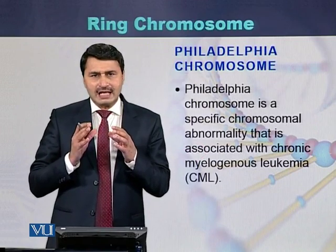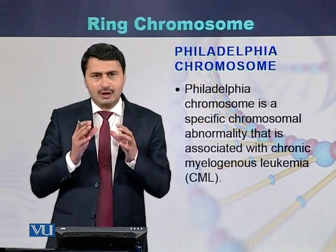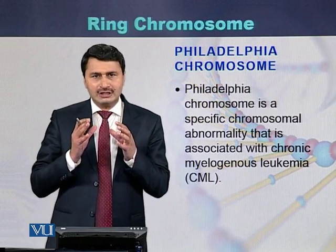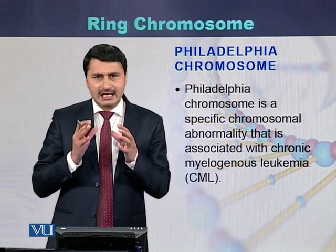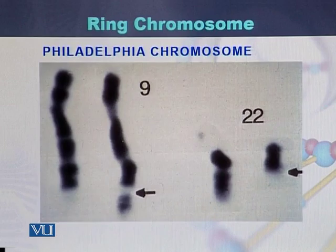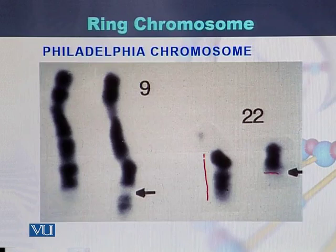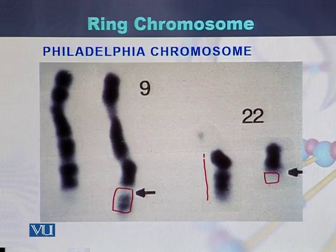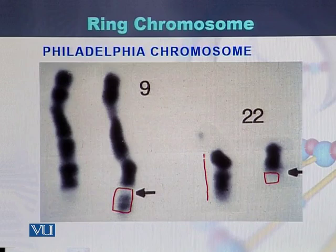Philadelphia chromosome is another type of chromosomal abnormality, usually found in patients with a specific disease called CML. In this case, a small fragment at the telomere of chromosome 22 is deleted and attached to the tip of chromosome 9. The resulting structure is called the Philadelphia chromosome.